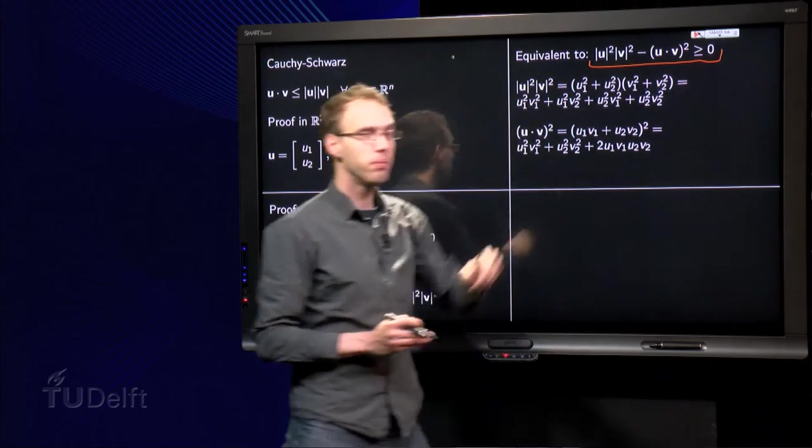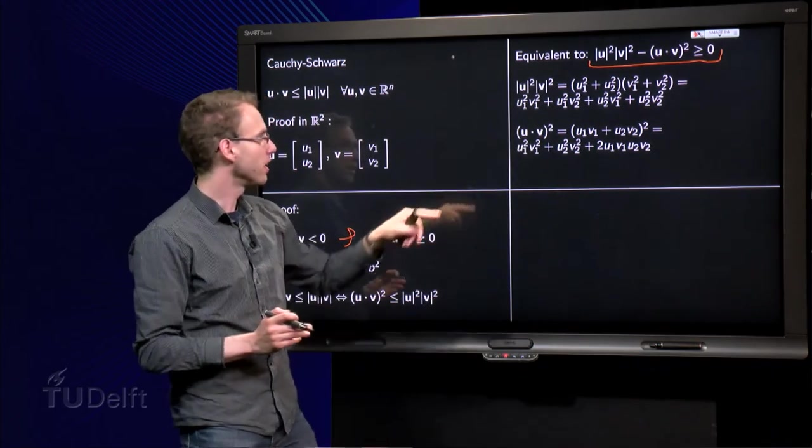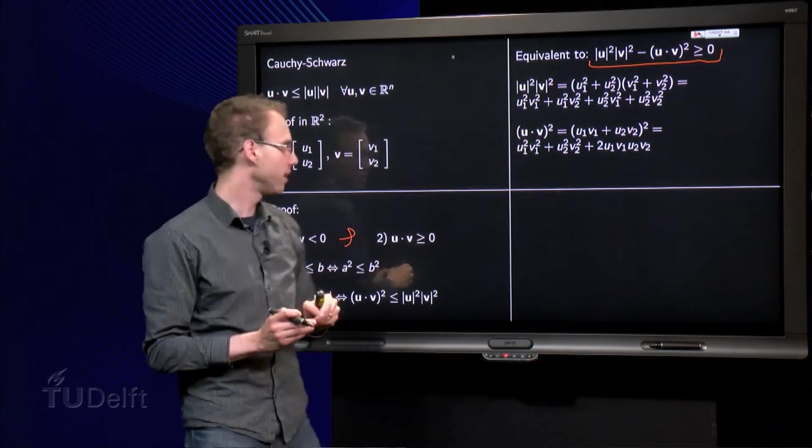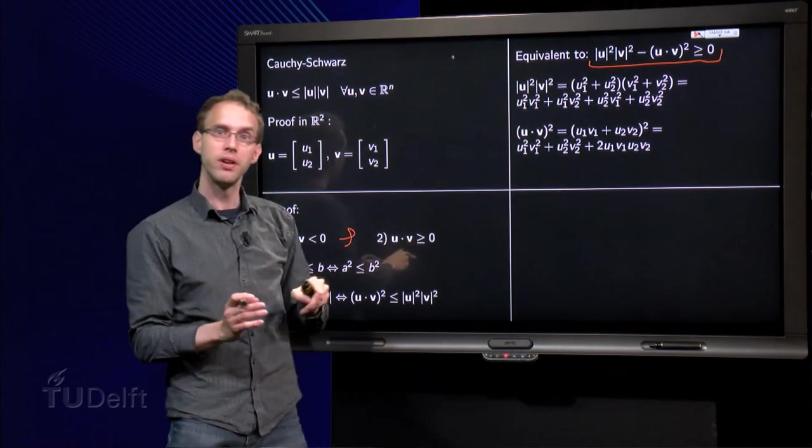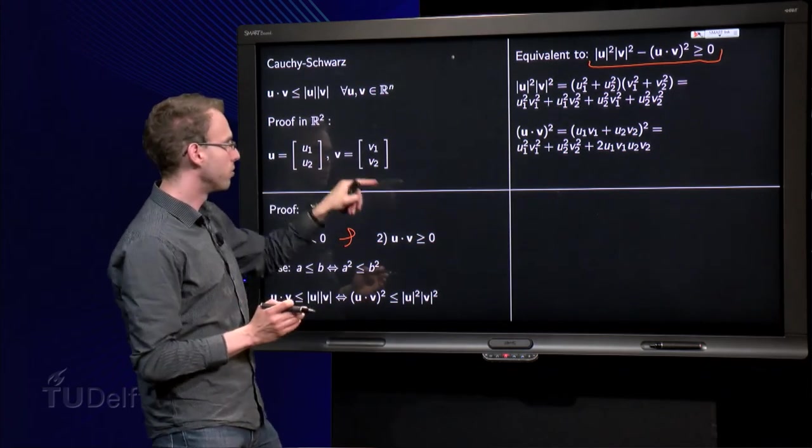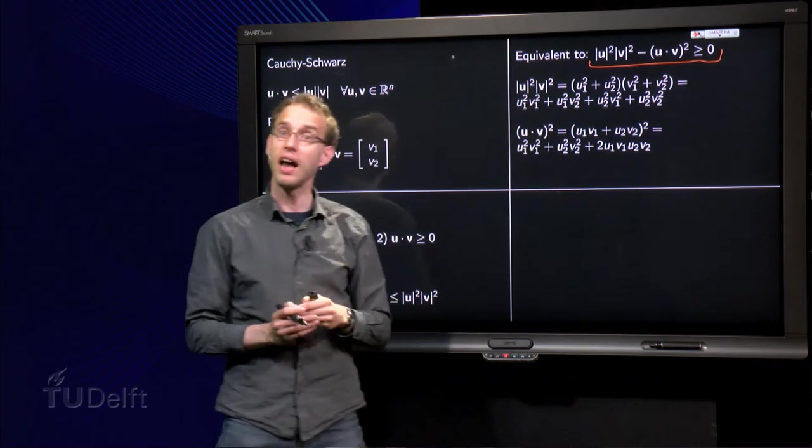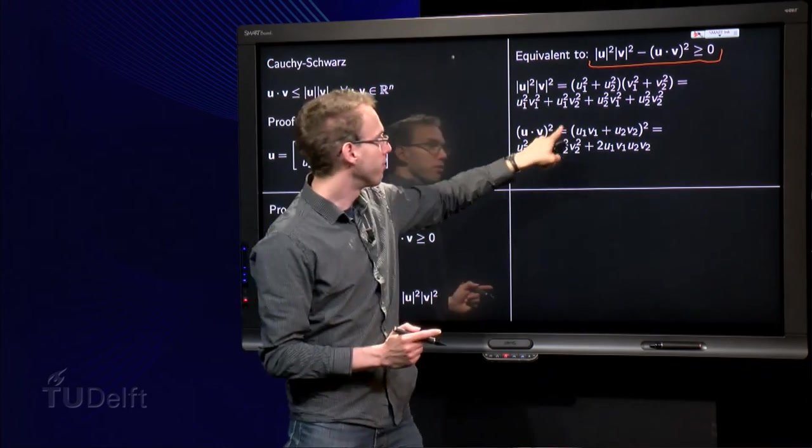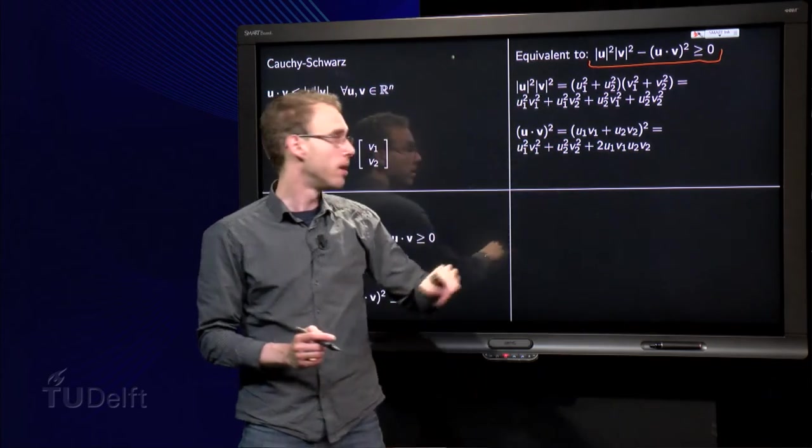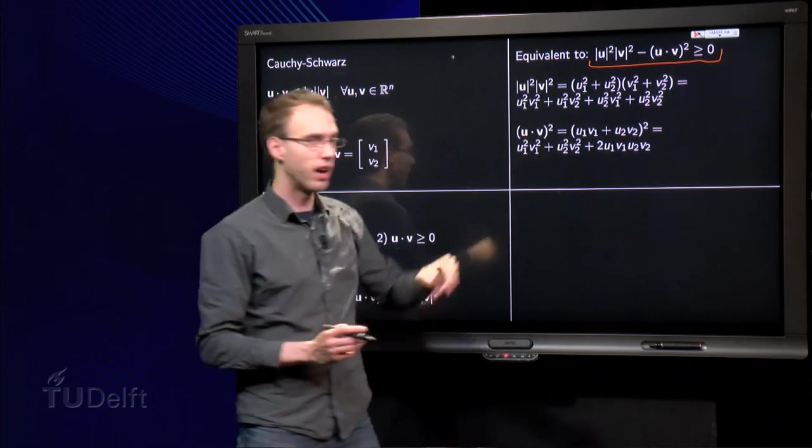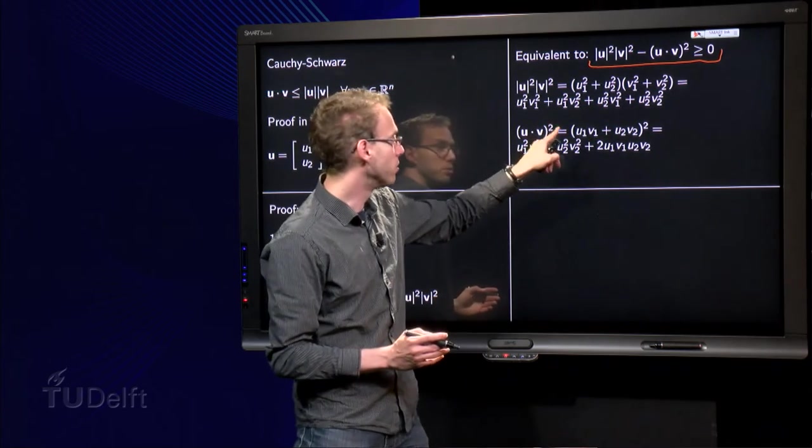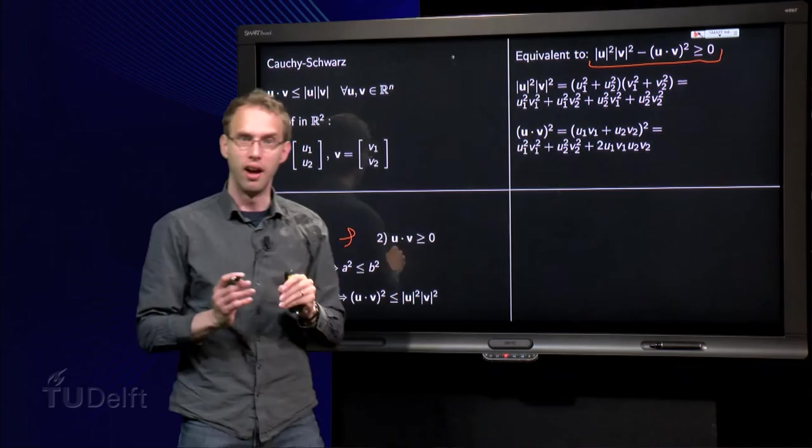Then we compute the second term. u inner product v squared. So, u inner product v. Inner product u₁v₁ + u₂v₂ over here. And then we need the square. First term squared over here. Plus the second term squared over there. Plus the double product. So, 2 times u₁v₁u₂v₂. Okay, there we are.